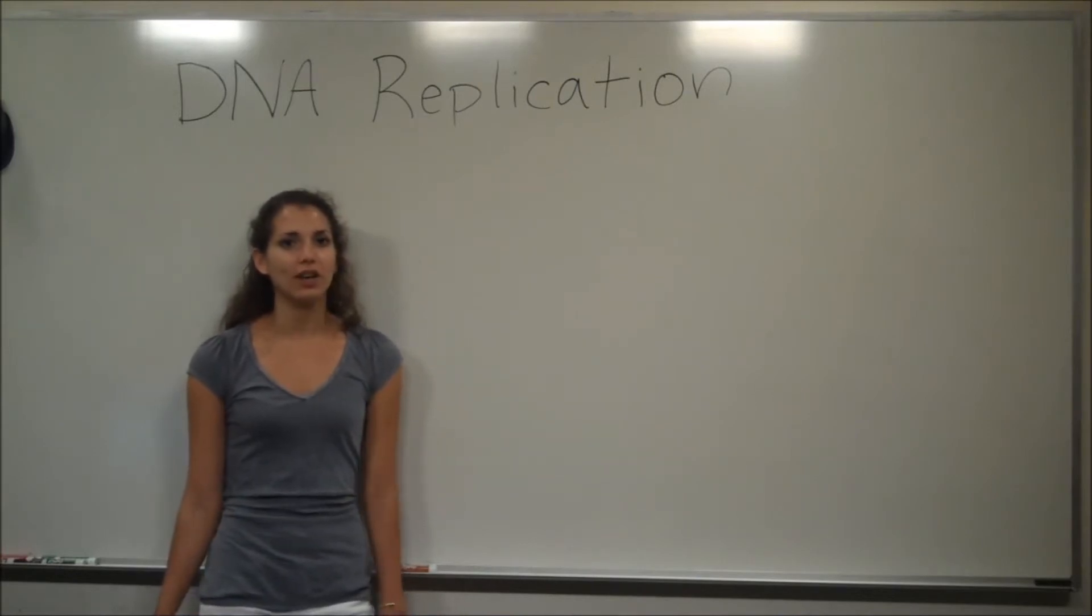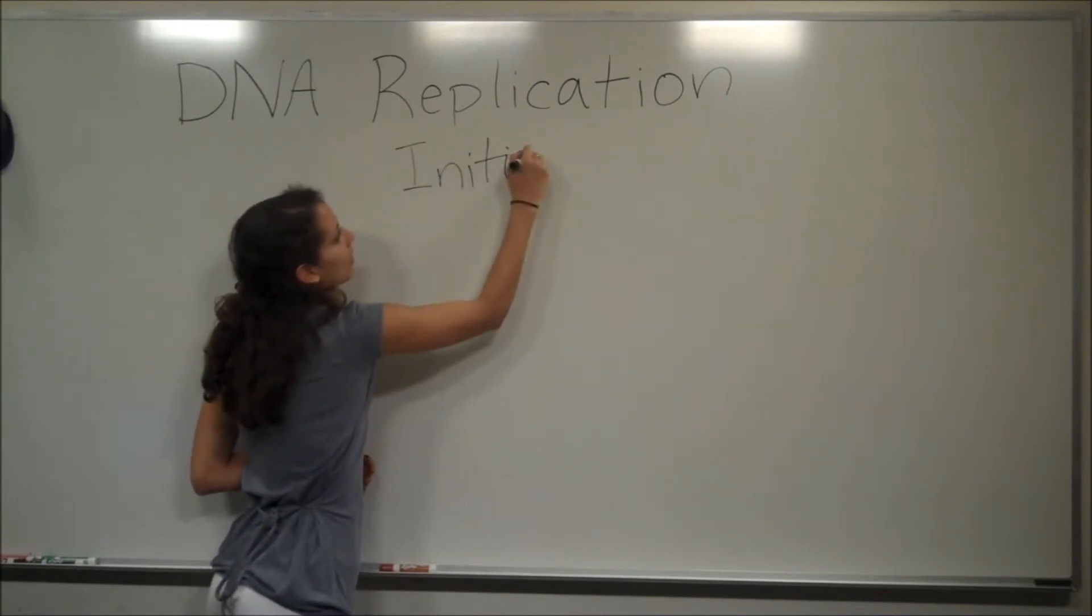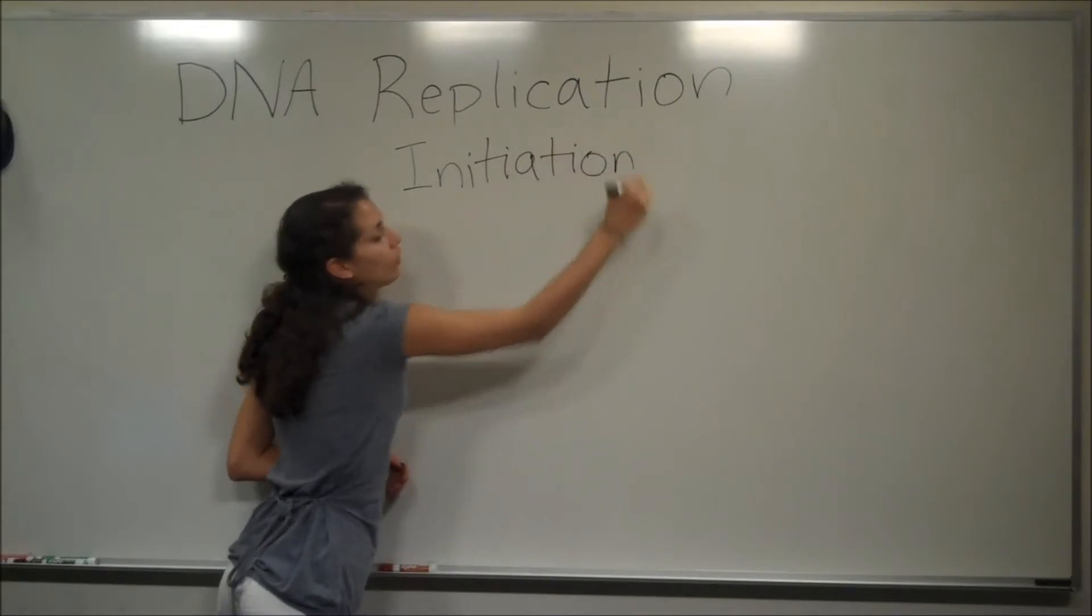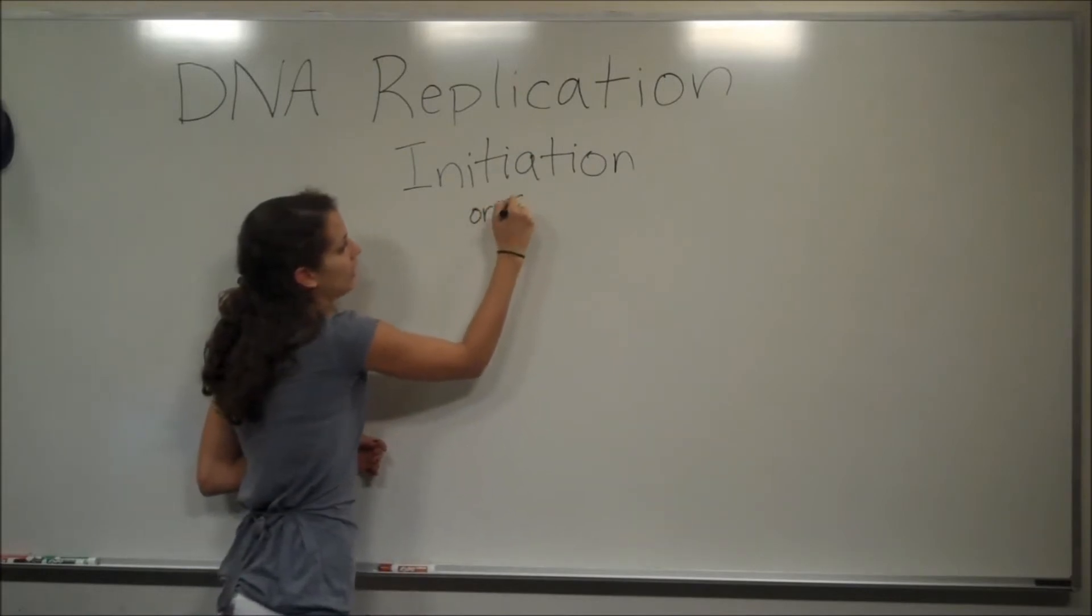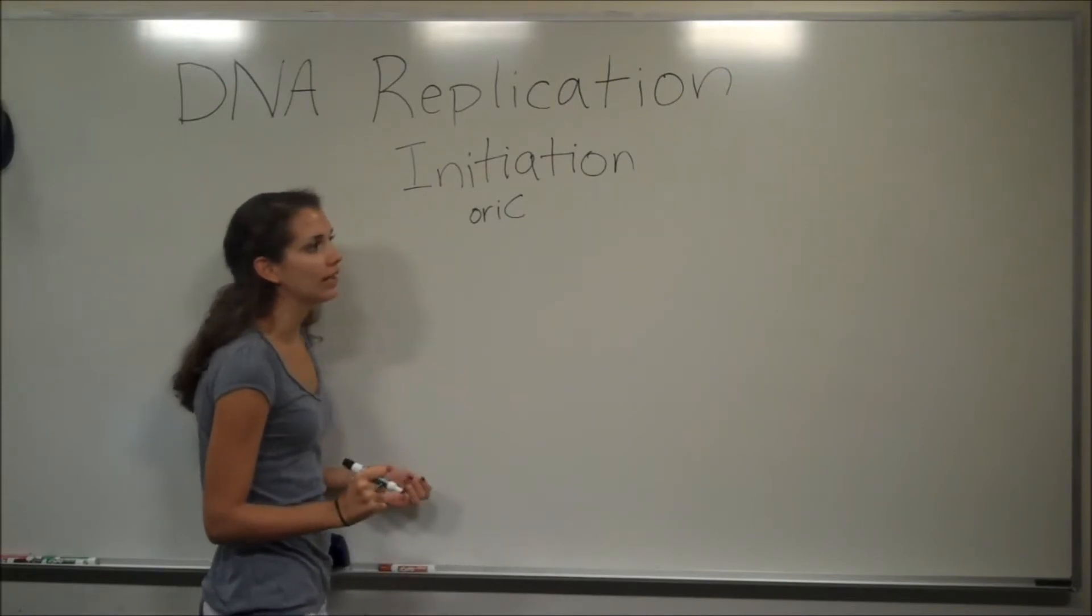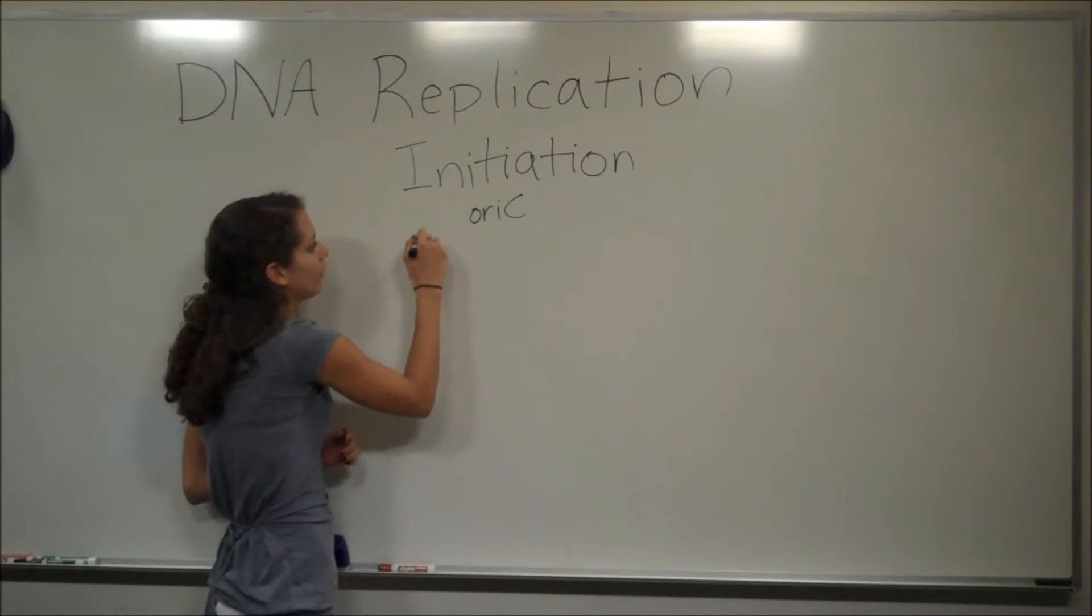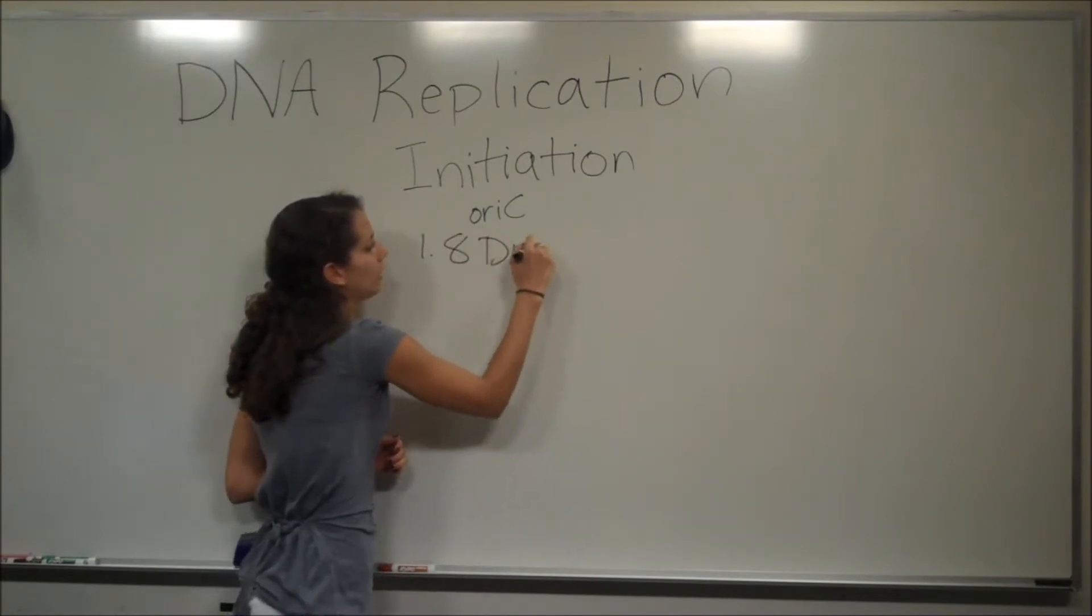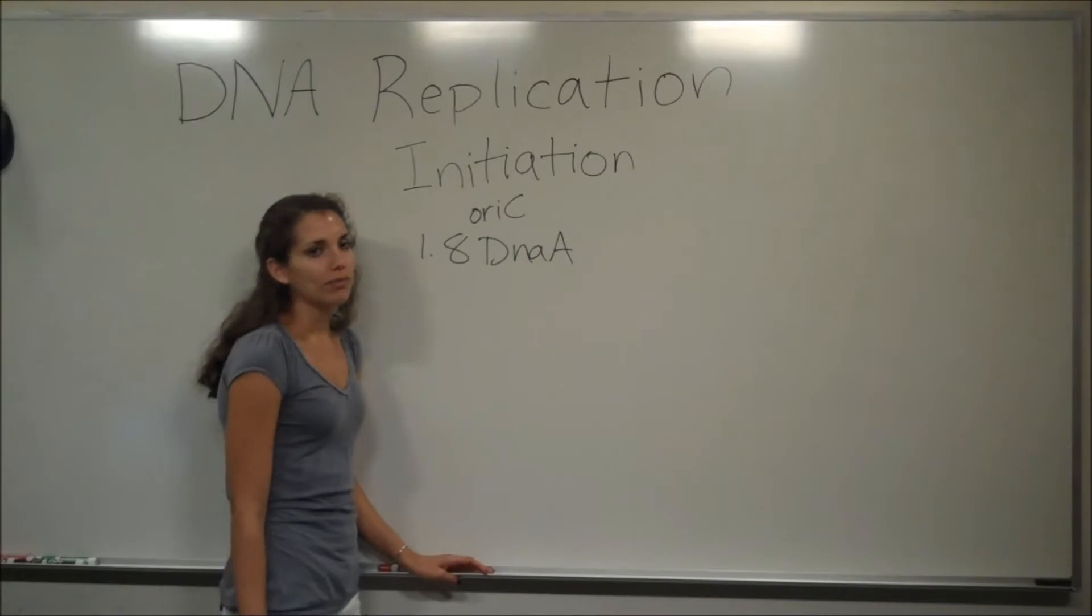So we're just going to jump right in and start talking about prokaryotic replication initiation. And everyone should know at this point that prokaryotic cells contain a single origin of replication, and it's shortened as oriC. So throughout this video I'll be talking about oriC or origin of replication. I'm going to start talking about some of the protein molecules that are involved in beginning initiation. So first, eight DnaA molecules are going to bind to the R and I sites within the origin of replication. These basically just activate the chromosome for DNA replication.